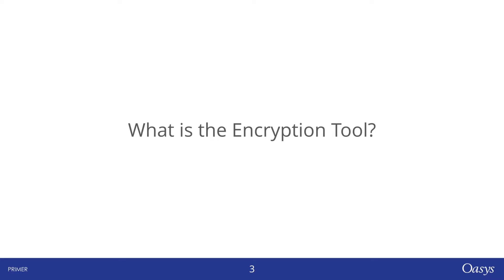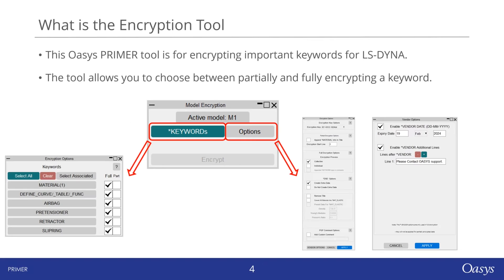So what is the encryption tool? The encryption tool in OASIS Primer is a dedicated feature for encrypting crucial keywords within your LS-Dyna models. You can encrypt various keywords like materials, load curves, airbags, seatbelt pretensioners, retractors, and slip rings.